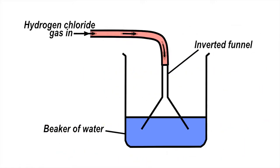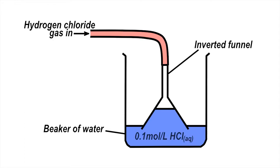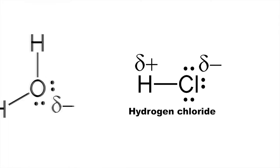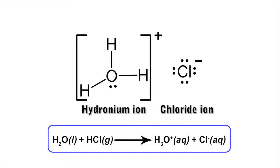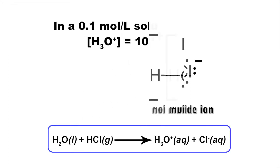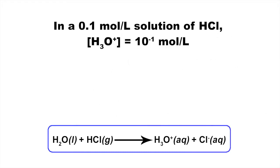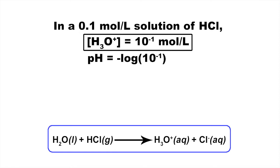What about a solution obtained by bubbling hydrogen chloride gas through water to obtain a 0.1 mole per litre solution of hydrochloric acid? Hydrogen chloride ionizes completely in water to form hydronium ions and chloride ions. The concentration of hydronium ions will therefore be 10 to the power of minus 1 moles per litre. So the pH is the negative logarithm of 10 to the power of minus 1, which equals 1.